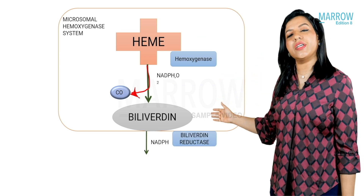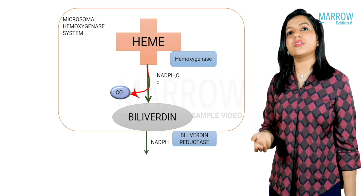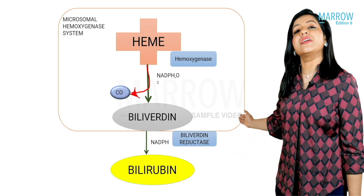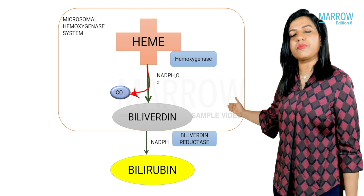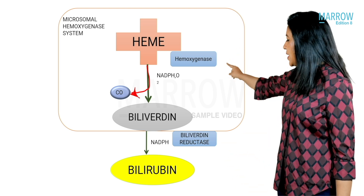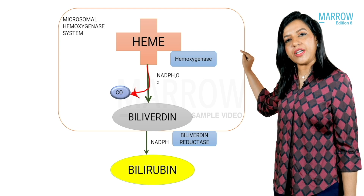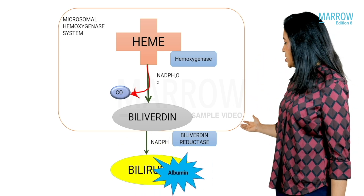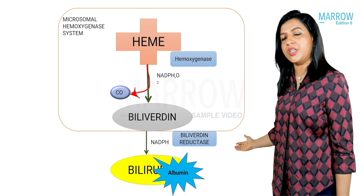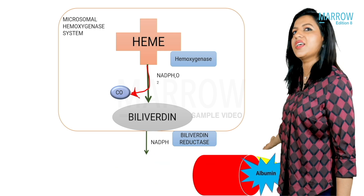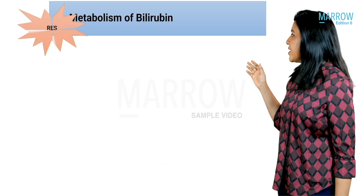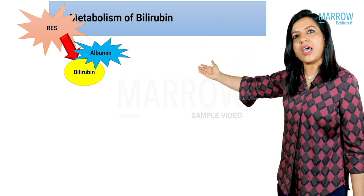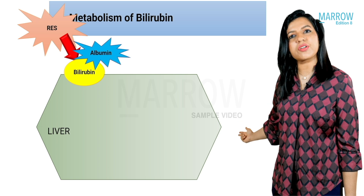Biliverdin is next converted to bilirubin, the yellow-colored compound, by the enzyme biliverdin reductase, which also requires NADPH. So heme is converted to bilirubin by two enzymes within the reticuloendothelial system. This bilirubin then binds to albumin, and the albumin-bound bilirubin is transported through the blood to the next organ system.